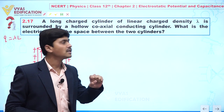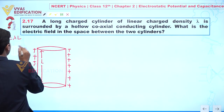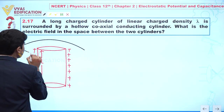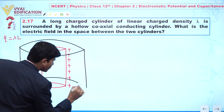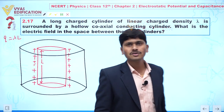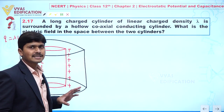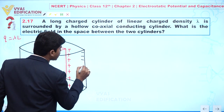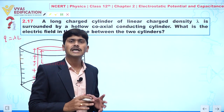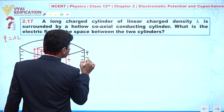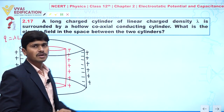The inner cylinder is surrounded by a hollow coaxial conducting cylinder. Due to the positive charge on the inner cylinder, negative charges are induced on the inner surface of the outer cylinder, because the outer cylinder is neutral. As a result, positive charges are developed on the outside of the outer cylinder.